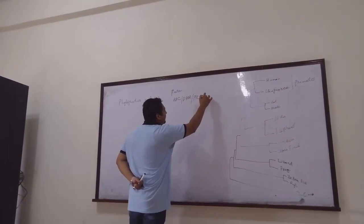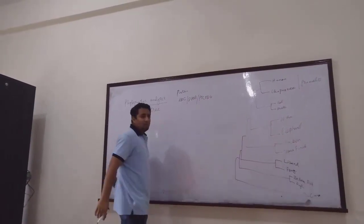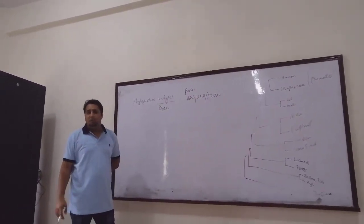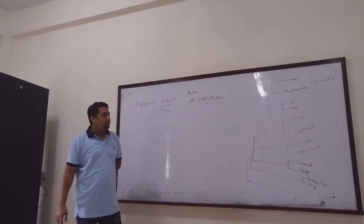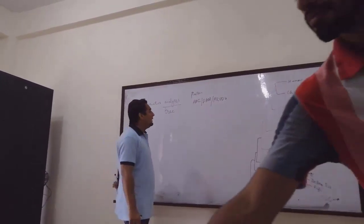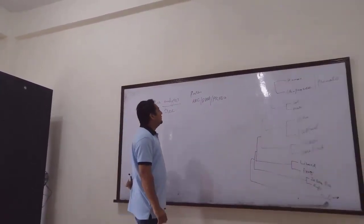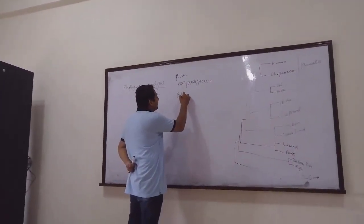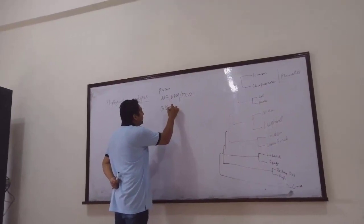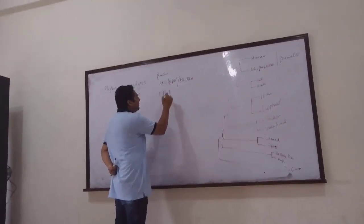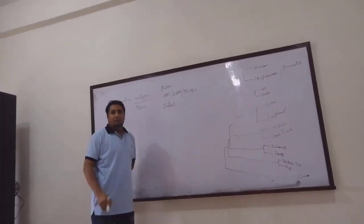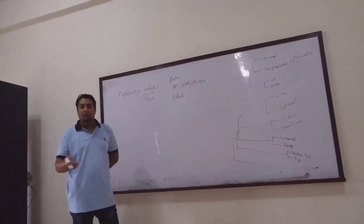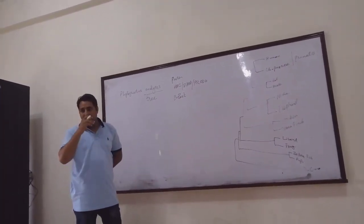Or any other gene you have. You just have to take the protein from UniProt, retrieve it from UniProt. After that you have to use the BLAST software. We have different types of BLAST, like BLASTN, BLASTX, and BLASTP.